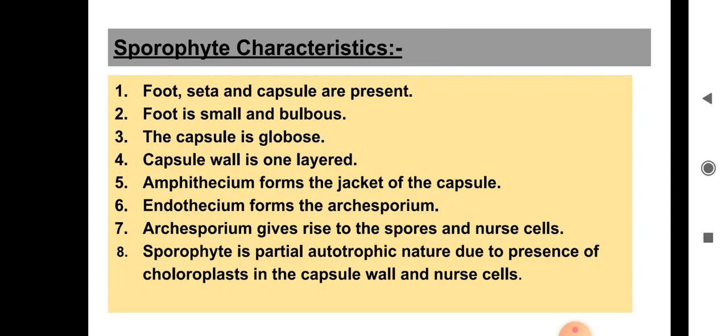The sporophyte is partially autotrophic in nature due to the presence of chloroplasts in the capsule wall and nurse cells — since chloroplasts are present, photosynthesis can occur and food is produced. However, in some cases the sporophyte totally depends upon the gametophyte for nourishment, making it parasitic in nature. Nurse cells provide nourishment to the spores.